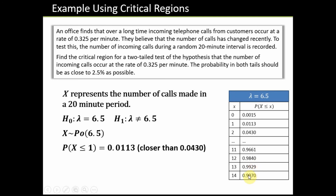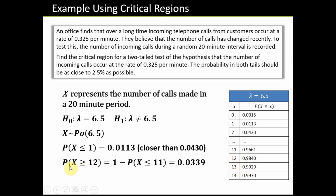For the upper critical region, we want the upper tail probability to be 0.025, meaning the cumulative probability to the left should be 0.975. Looking at the two candidate values, the one at x = 11 is closer. That means all values of 12 and above form the critical region. The probability that X ≥ 12 is 1 minus the cumulative probability at x = 11, which comes out to 0.0339. So our critical regions are X ≤ 1 and X ≥ 12.